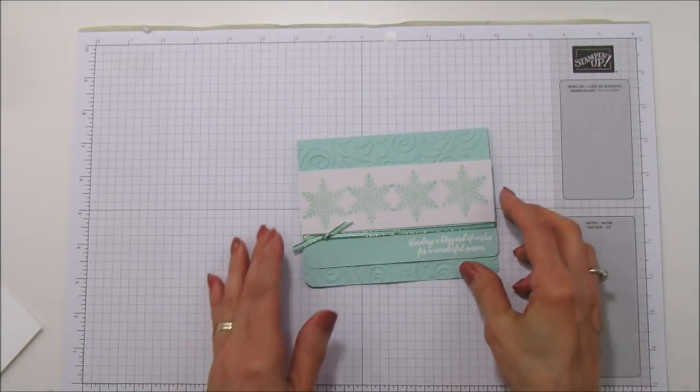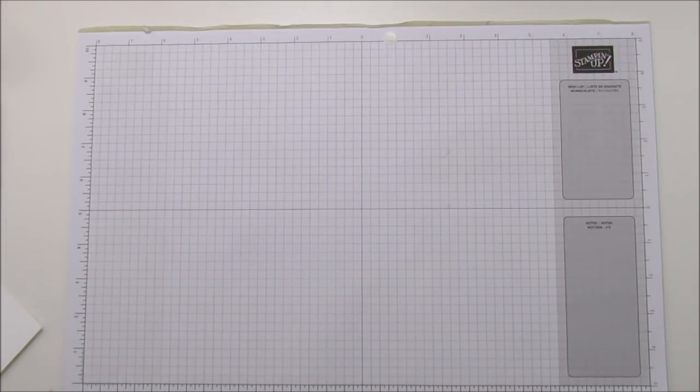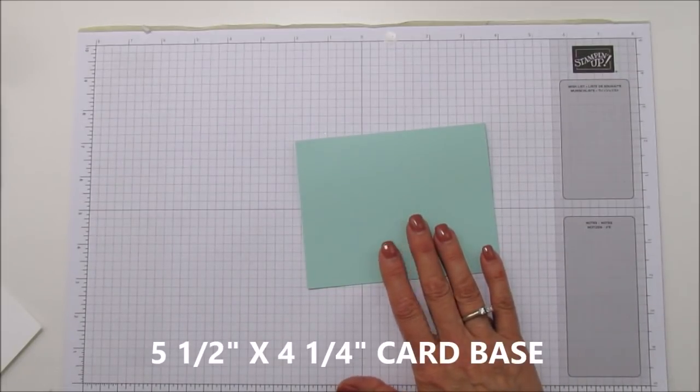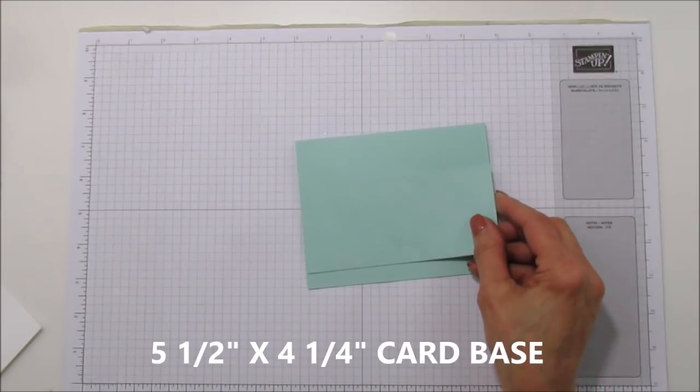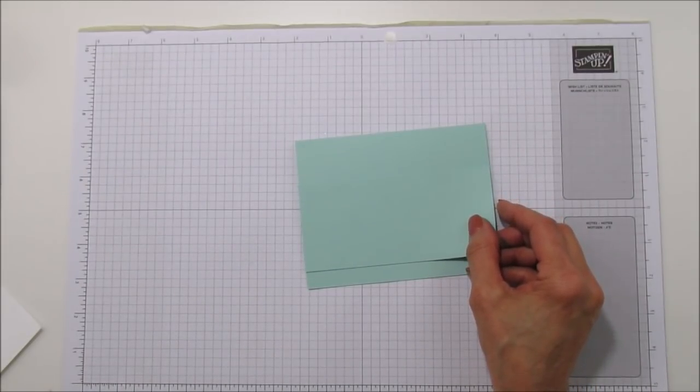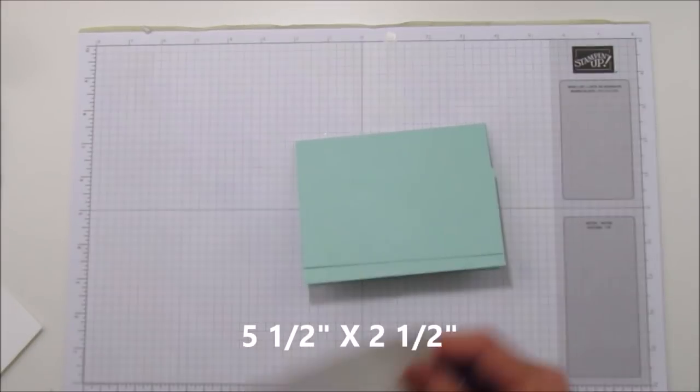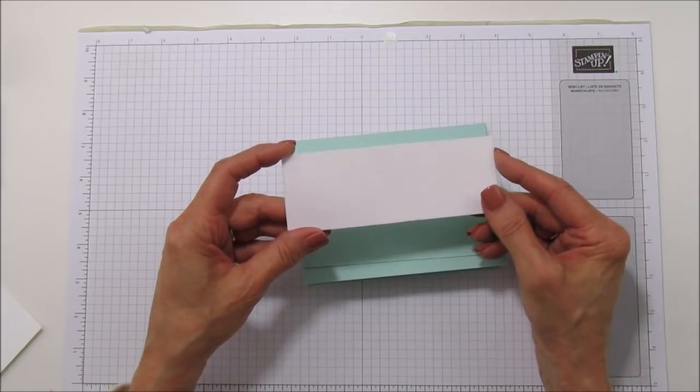All right so let's get started. For this card you are going to need a piece of pool party and it is a basic five and a half by four and a quarter. You're going to need another piece that is five and a half by two and a half and this is what we're going to stamp the sentiment on and then the velvet sheet is two inches by five and a half.